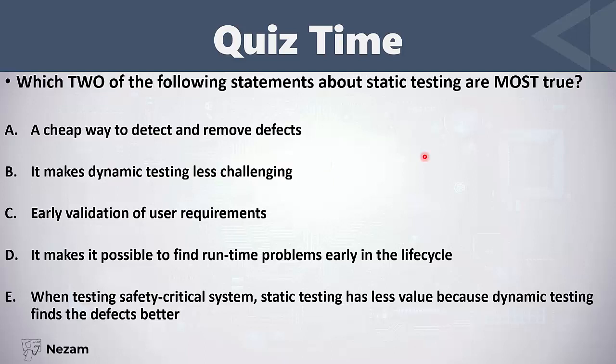Answer B: it makes dynamic testing less challenging. This is wrong — dynamic testing will always be challenging. What static testing does is find other types of defects early. Answer C: validation of user requirements. This is correct — we validate requirements and make sure they are written in a good and testable way.